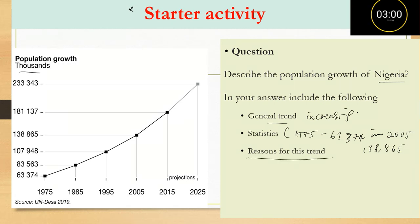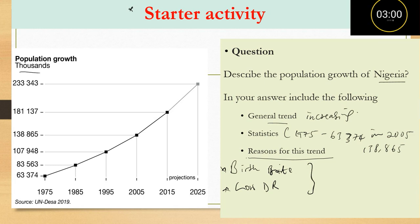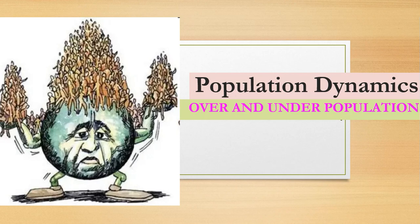The reason why population continues to increase is because of high birth rate and low death rate. High birth rate makes the population increase, and low death rate also makes the population increase. Give the reasons for high birth rate and low death rate. If you need more detail, please check lesson one on population dynamics.